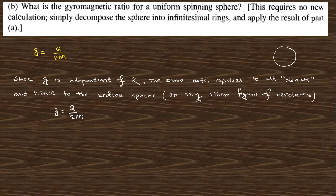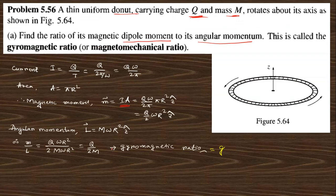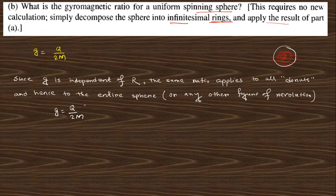What is the gyromagnetic ratio for a uniform spinning sphere? For the sphere, we can treat it as a combination of many thin spherical shells, or equivalently as a large number of rings. Applying the same result as for the ring, the gyromagnetic ratio is q/(2m). This does not depend on the radius of the sphere, so the result is the same as before.